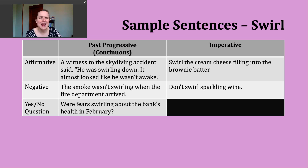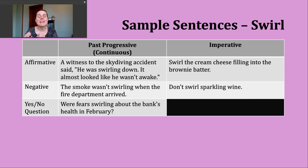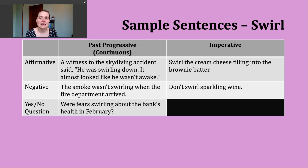Some teachers and textbooks will call this the past continuous — that's fine, it means the exact same thing. As a tip, past progressive has two Ps, reminding you that you need two parts to make the verb. In the affirmative, you have your subject, then was for I, he, she, or it, or were for you, we, or they, followed by the -ing form of the verb. So part one is the past form of 'be' — was or were — and part two is the -ing form.